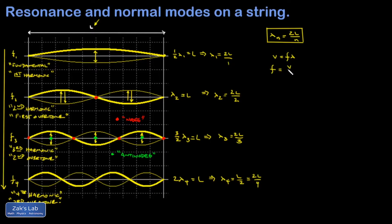Solving for frequency, I could say f is v over lambda. And I could say the nth resonant frequency would be v over the nth resonant wavelength. Plugging in the formula that I just got for the nth resonant wavelength, dividing by it is the same as multiplying by the reciprocal. So I get nv over two L.